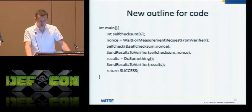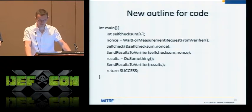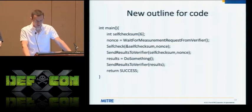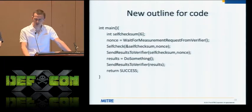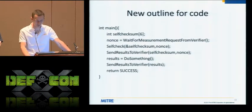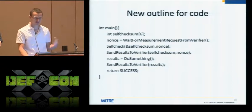Our framework looks like this in pseudo-code: we have our checksum waiting for a request from a verifier server. It gets the nonce from that server, which tells it the server wants it to attest to its integrity — so the server can know whether or not to believe any measurements it sends. It does a self-checksum based on that nonce and then sends the results back to the server.